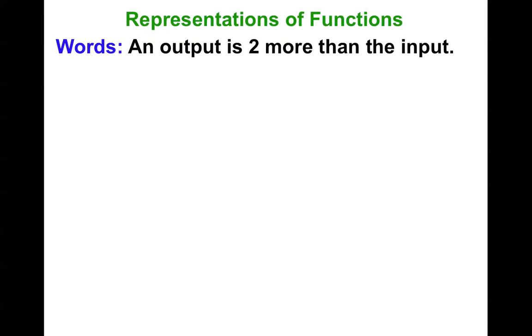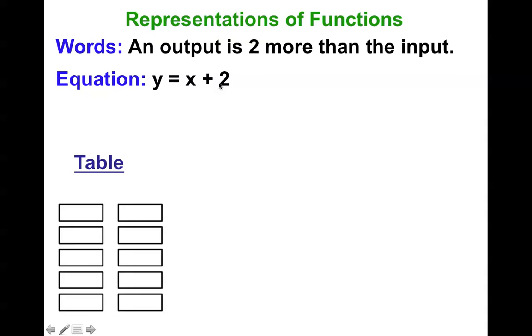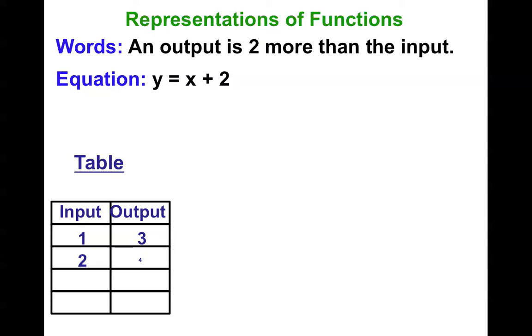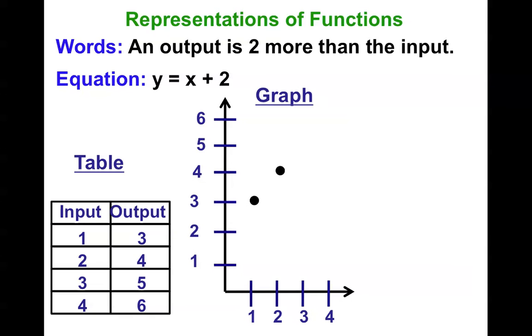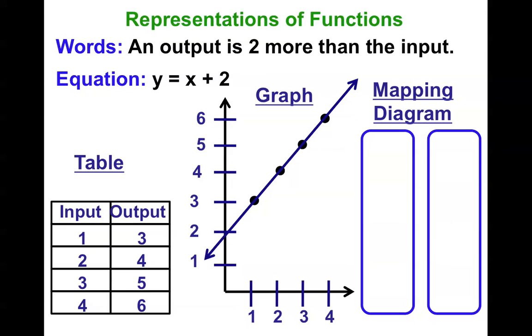So here's what we wanted you to know. There are lots of different ways to represent a function. One, with words. So if I tell you an output is two more than an input, it could be represented as an equation. The output is y. Is means equals two more than the input. The input plus two. Once I have the equation, I could create a table. I could pick an input, and I get an output. Pick an input, get an output. And then I could graph that relationship. I could even use a mapping diagram. Remember that from last lesson? Notice one is to three, two is to four, three is to five, and four is to six.